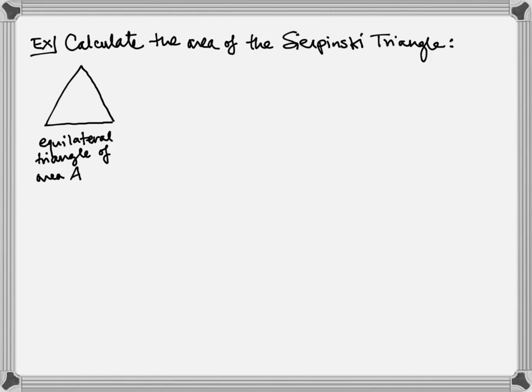What you do to make the Sierpinski triangle is you do this iteratively. You cut out a triangle from the middle, so we cut out this pink equilateral triangle.